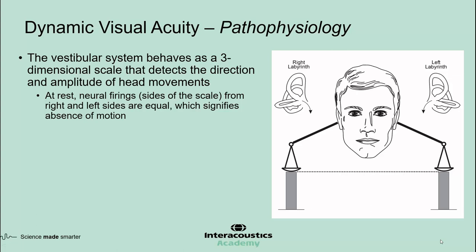The vestibular system essentially behaves as a three-dimensional scale. The changes in the balance between two sides tell us about the direction and amplitude of head movements. For simplicity, only the head movements in the plane of the lateral semicircular canals will be considered here. When the head is at rest, the tonic neural activity from the right and left sides are equal. This is depicted as the sides of the scales being in equilibrium.